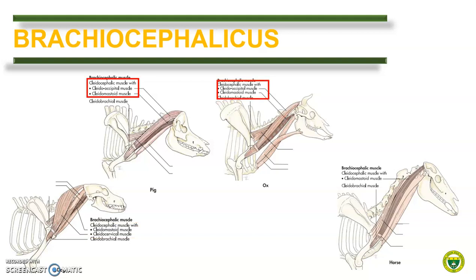In pigs and in ruminants, the clidocephalicus is divided into clidooccipitalis because it has an insertion at the occipital bone, and clidomastoidus because it is inserted at the mastoid process of the temporal bone. In the horse, the clidocephalicus muscle is undivided and named as clidomastoidus.